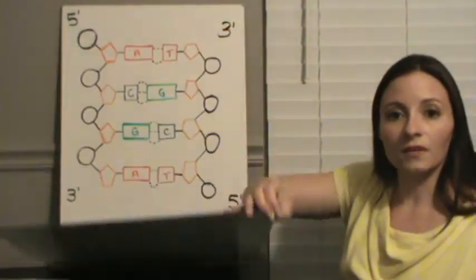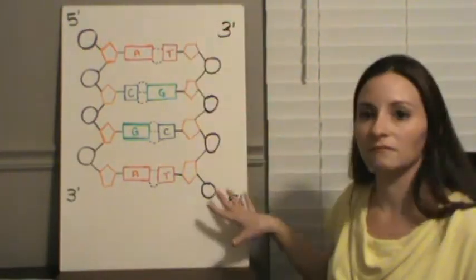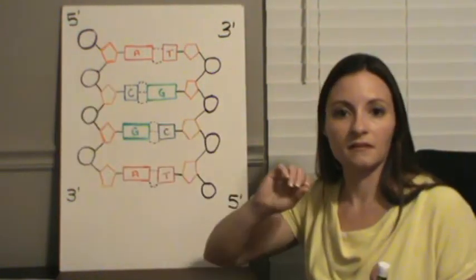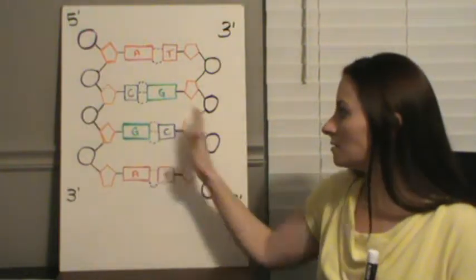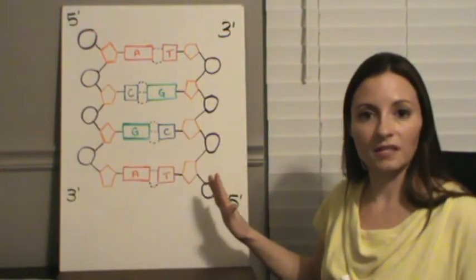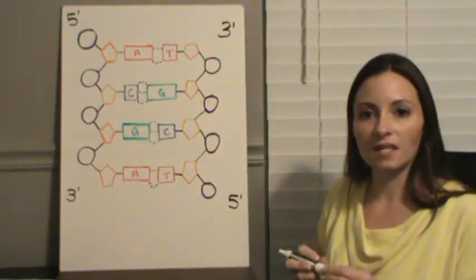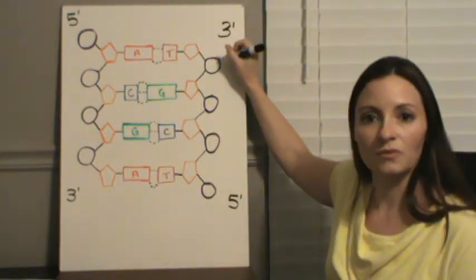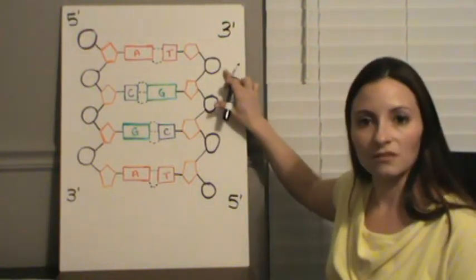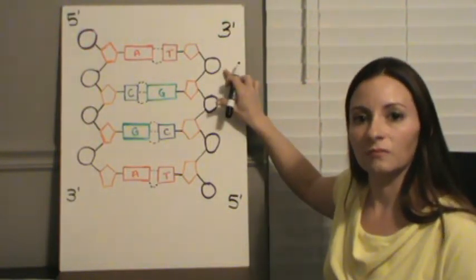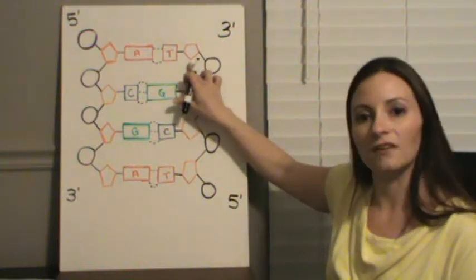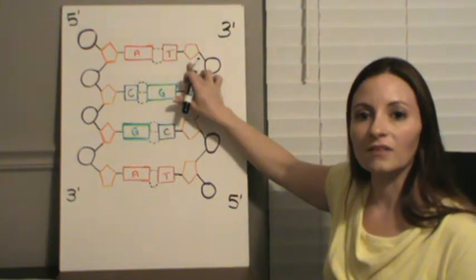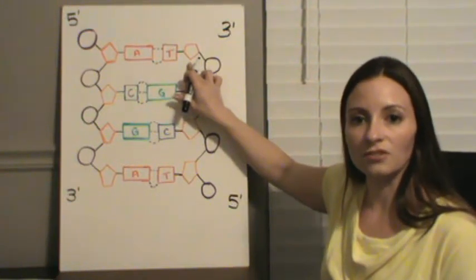So to start out with, let's look at what DNA looks like. DNA is a double stranded piece, and each piece of DNA has three parts. It's going to have a phosphate group, which we have represented here as the purple circles. Each piece is also going to have a 5-carbon sugar, which is represented by the orange pieces, and then it's going to have a nitrogen base, one of four nitrogen bases: